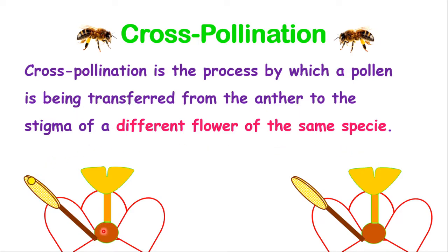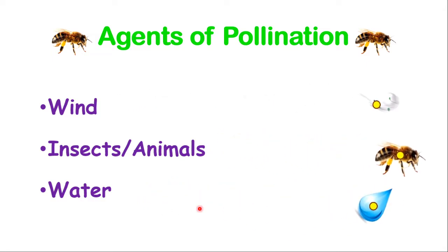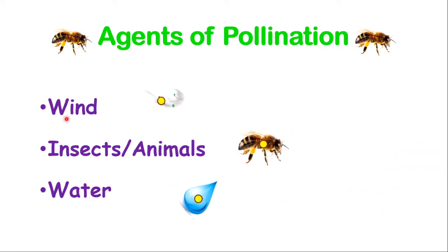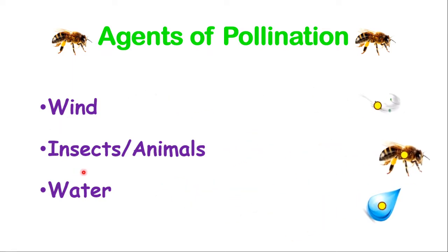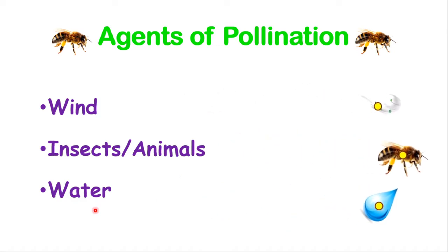As you notice in the demonstration, there is one flower on the left and the pollen is being transferred from the anther over to the stigma of the other flower. Now pollination can be assisted in different ways by different agents. We have three main ones: wind, which can carry pollen from anther to stigma; insects or animals, which could assist in transferring pollen; and water can also assist in that process.